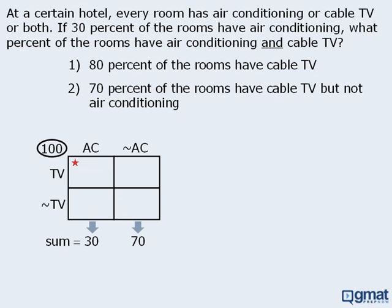There is one more piece of information we can add, and if we do not spot it we cannot answer this question correctly. The question tells us that every room in the hotel has air conditioning or cable TV or both. Since every room has at least one of these features, the box representing rooms with neither air conditioning nor cable TV must contain zero rooms. From this we can conclude that since the two bottom boxes must add to 70, the cable-TV-only box must contain 70 rooms.